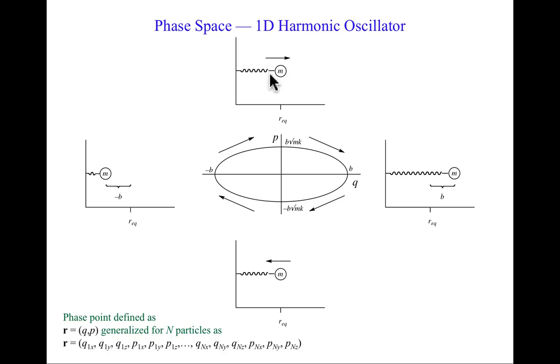For convenience we're going to choose a one-dimensional case, so there's only a single spatial dimension we could call Q. A one-dimensional harmonic oscillator is a mass on a spring, and it can only move back and forth. If I pull it in this direction those will be positive values of Q, and if I push it in this direction that's a negative value of Q relative to an equilibrium distance which I'll define as zero.